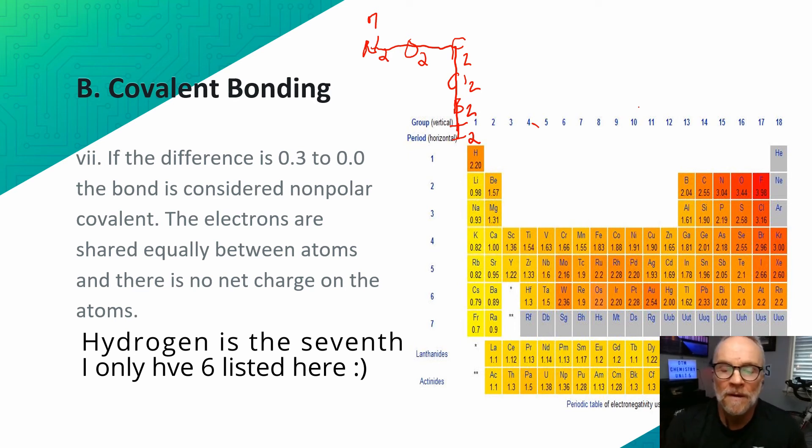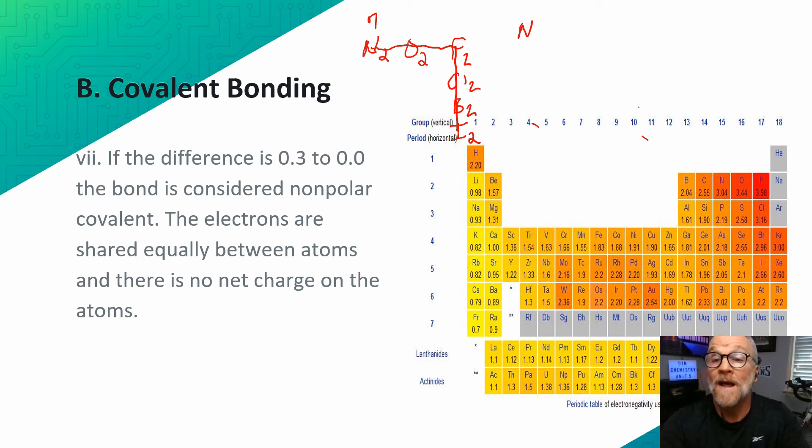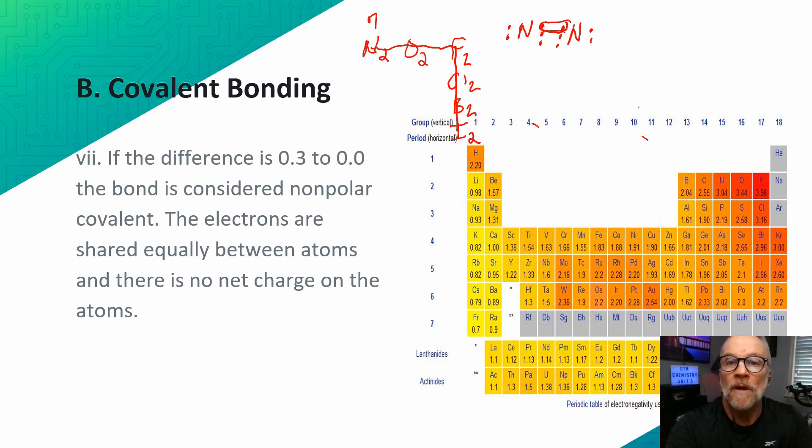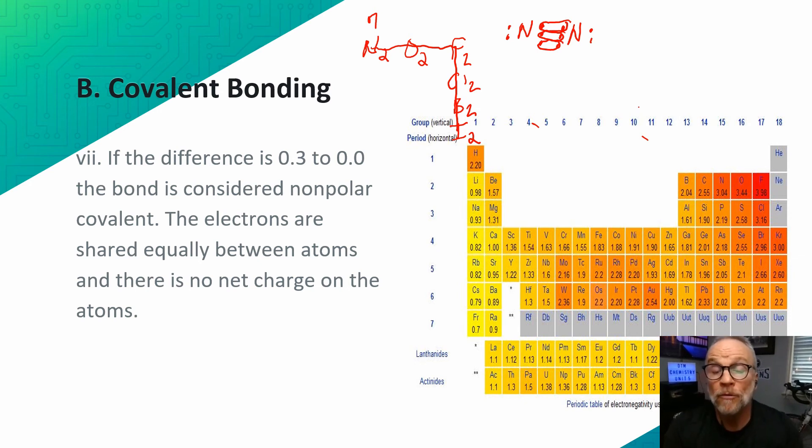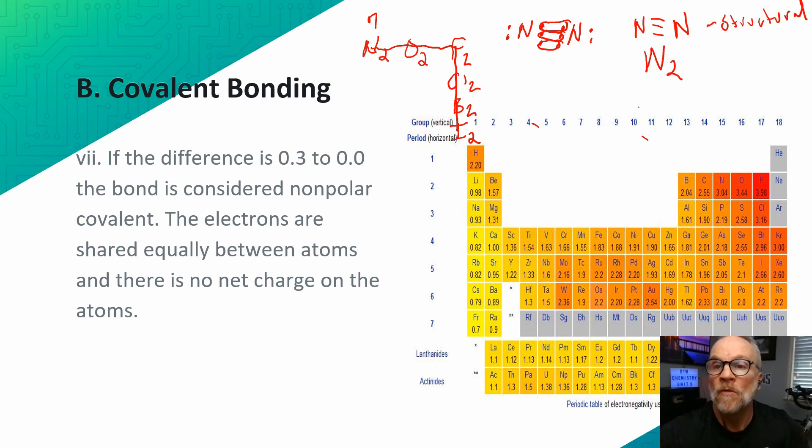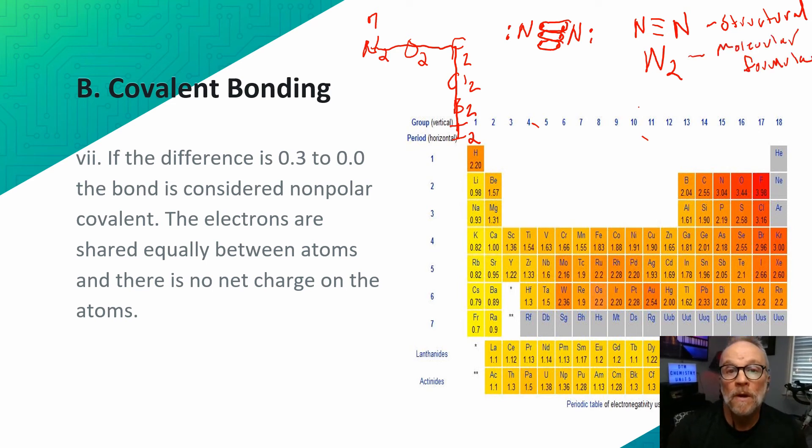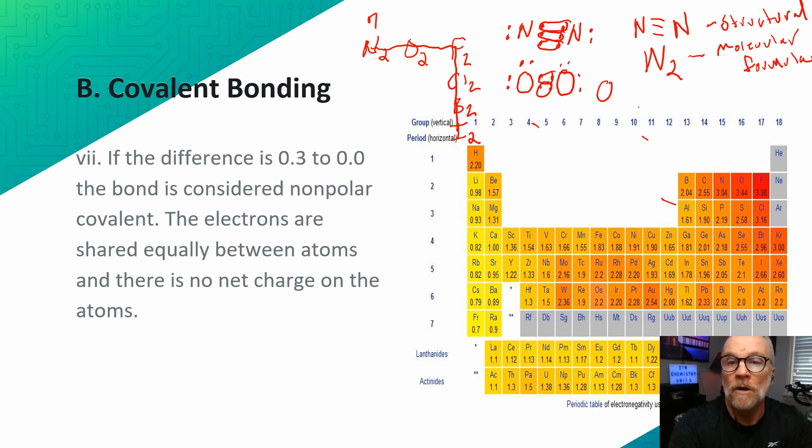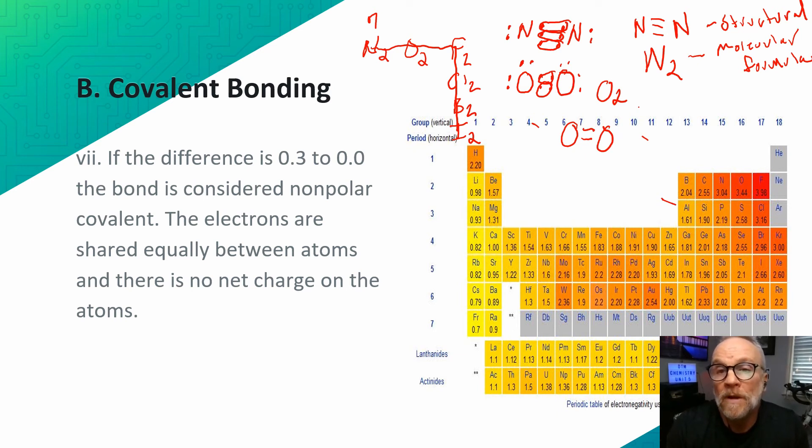You might ask yourself, what type of covalent bonds form between these? Nitrogen has five valence electrons. It shares three pairs of electrons between the atoms. So we call this a triple bond, and you can write it like this or like this. It's N2. We call this a structural formula, and we call this a molecular formula. Oxygen has six valence electrons, and it shares two pair. You'd write that as O2, or an oxygen atom with two lines in between it.